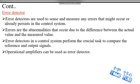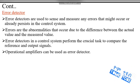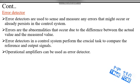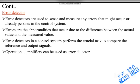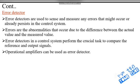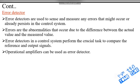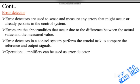Errors are the abnormalities that occur due to the difference between the actual value and the measured value. The error detector in a control system performs the crucial task of comparing the reference and output signals. Operational amplifiers can be used as an error detector.